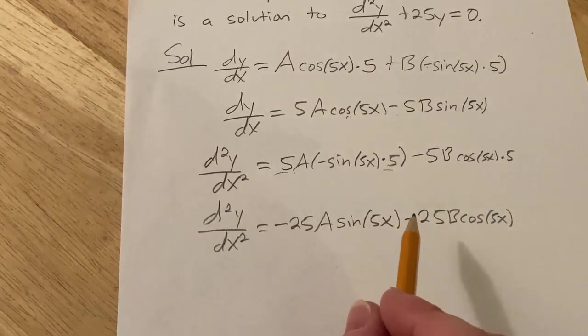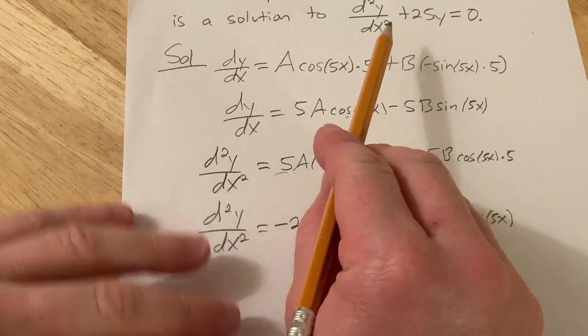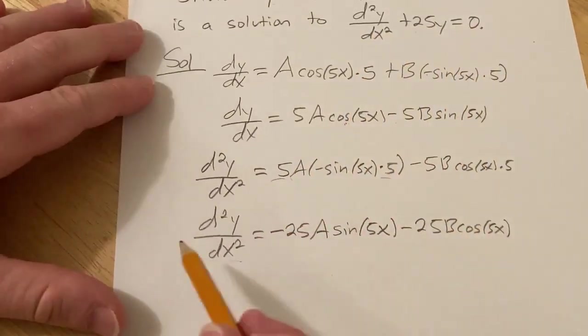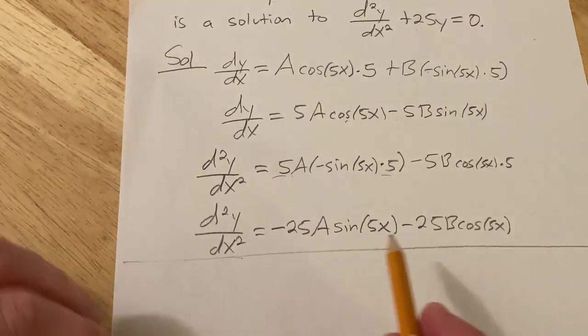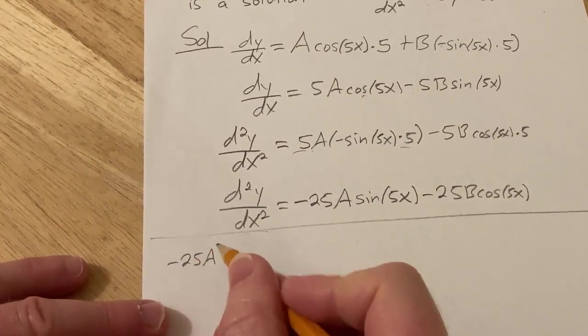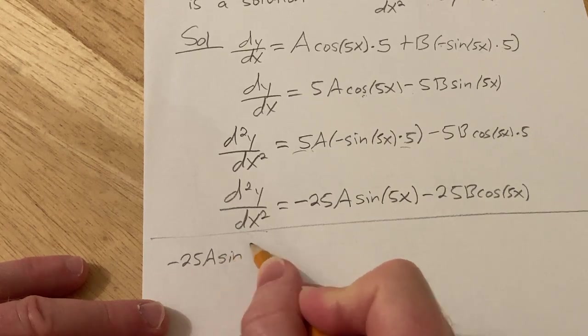So now we just have to take this and plug it into our differential equation, which is up here. So it says that the second derivative plus 25y is 0. So I'm going to go ahead and plug in to the DE. So the second derivative, negative 25A sine 5x,